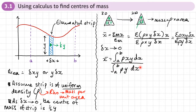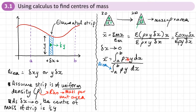The bottom part of the formula is just the area of the shape. If it's a simple shape like a triangle or semicircle where we know the area, we can just write it down without integration. For the top part, we take the equation of the curve, multiply by x, and integrate it.